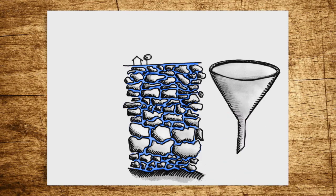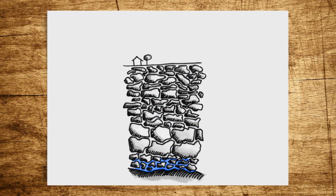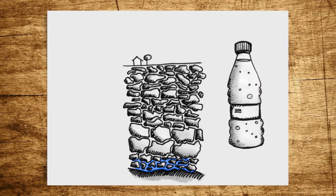Sooner or later, it reaches impermeable layers that consist of, for example, clay or loam. Here, the groundwater collects and forms the aquifer, from which raw water can be taken and processed to drinking water.